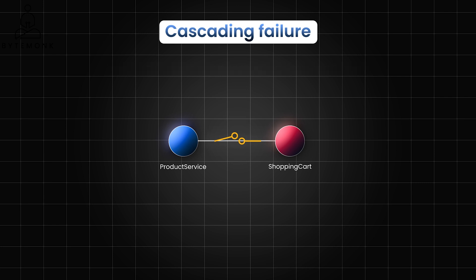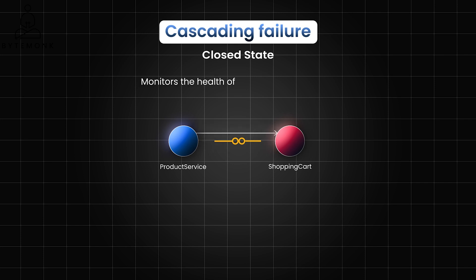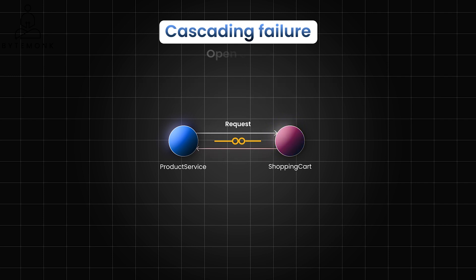In normal operation mode, the circuit breaker is closed, allowing requests to flow through to the dependent service. The circuit breaker constantly monitors the health of the dependent service, tracking the number of failed requests, latency, and other relevant metrics. It acts as a counter, incrementing each time an operation fails. If the failure rate exceeds a certain threshold, or if the dependent service becomes unresponsive, the circuit breaker trips and opens.